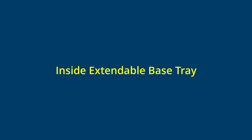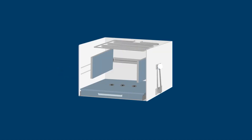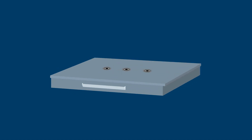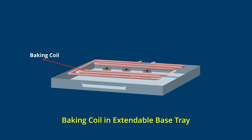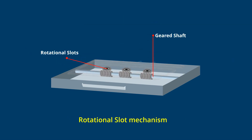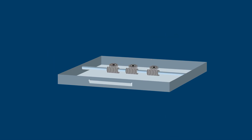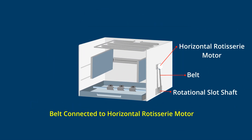The extendable base tray is a rectangular box and contains the rotational slot mechanism as well as the baking coil. The geared shaft which drives the rotational slots is powered by a belt connected to the motor of the horizontal rotisserie.